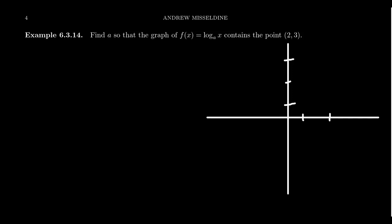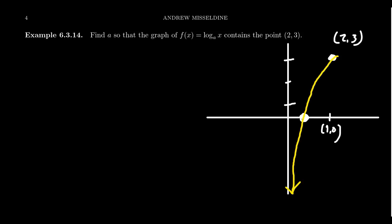So we have this point (2, 3). Since our logarithm hasn't been transformed whatsoever, we know it also contains the standard x-intercept (1, 0). If we think about what this logarithm would look like, its vertical asymptote would still be the y-axis. We would see a graph something like this — this is f. We can see this from the picture.